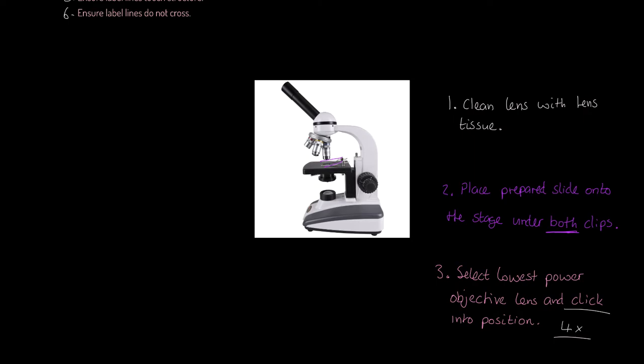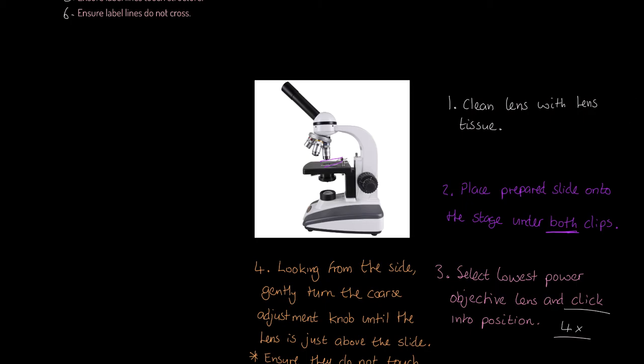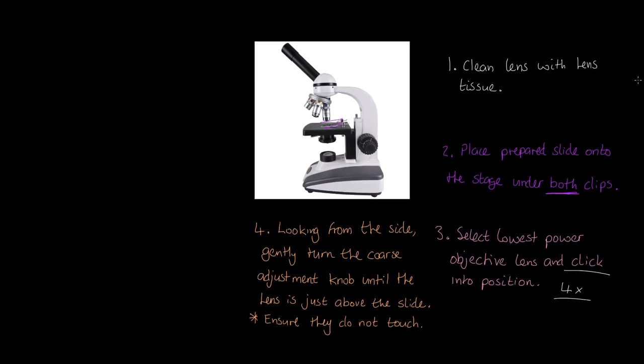Next, and this is perhaps where very frequently things will go wrong, but this is where we want you to be really hyper accurate. Looking from the side now, we're not looking through the eyepiece. We're not looking down through the microscope. Looking from the side now. Gently turn the coarse adjustment knob until the lens is just above the slide. So, we're using the coarse adjustment, and what we're doing, ultimately, is we're bringing the stage up until there's very little distance between the lens itself and the specimen. But, importantly, we do not allow them to touch, which is exactly why you're looking from the side.